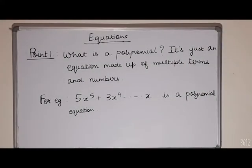Our first point is, what is a polynomial? It's just an equation made up of multiple numbers and terms. For example, 5x to the power 5 plus 3x to the power 4 which goes up to x is a polynomial equation.